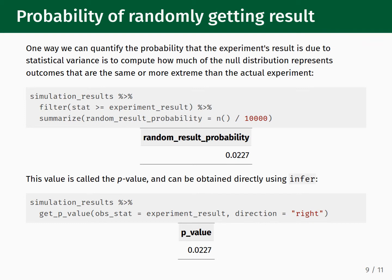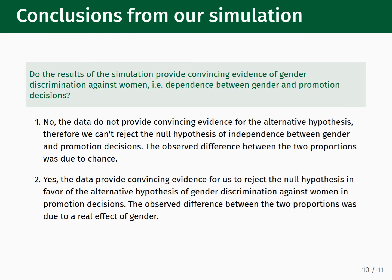This value is called the p-value. The infer package provides a convenience function get_p_value for calculating p-values so we don't have to do it manually. The inputs for get_p_value match shade_p_value from the previous slide. obs_stat equals experiment_result is where we input the observed experimental result, and direction equals right says that when computing the p-value we only count simulation results with outcomes greater than or equal to obs_stat.